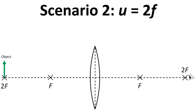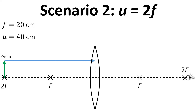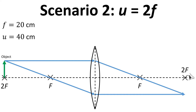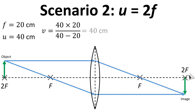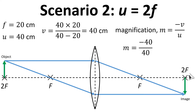For scenario two the object is at 2f: the focal length is 20 centimetres and u is 40 centimetres. Drawing the light rays shows the image focused at 2f on the other side. Putting the numbers into the equations gives v equals 40 centimetres — again 2f — and magnification equals minus 1.